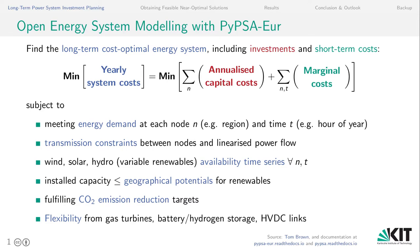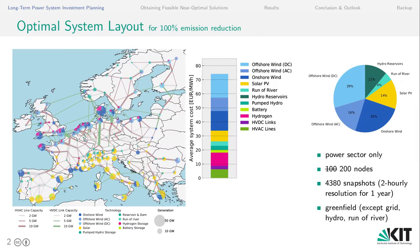For both the spatial-temporal representation of available renewable resources and to see bottlenecks in the transmission grid, we typically run the optimization for hundreds of nodes and an hourly resolution for a full year in a single optimization problem for one set of cost parameters. Since we only include continuous variables and linear constraints, we can avail of the computational advantages of linear programming. In this example, we optimized the system for 100% emission reduction, considering only the power sector, a 200-node model of the European transmission system resolved at a two-hourly resolution for a full year.